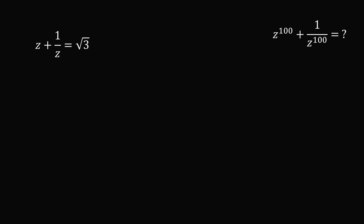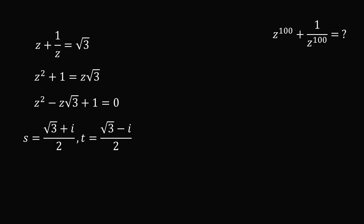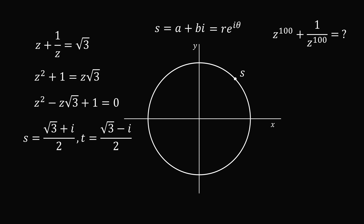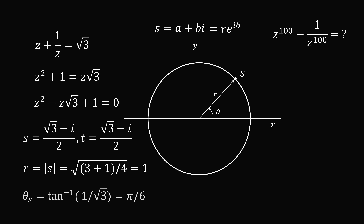For completeness, I'll illustrate another method using complex numbers. We start with the equation, multiply both sides by z to get a quadratic, yielding two roots s and t. We convert from rectangular form to polar form: r equals the square root of (3 plus 1) all over 4, which equals 1, and theta equals arctan of 1 over root 3, which equals pi over 6. So one solution is e to the power of i pi over 6. I'll illustrate this for one solution; you can apply the same to the other root using polar coordinates.